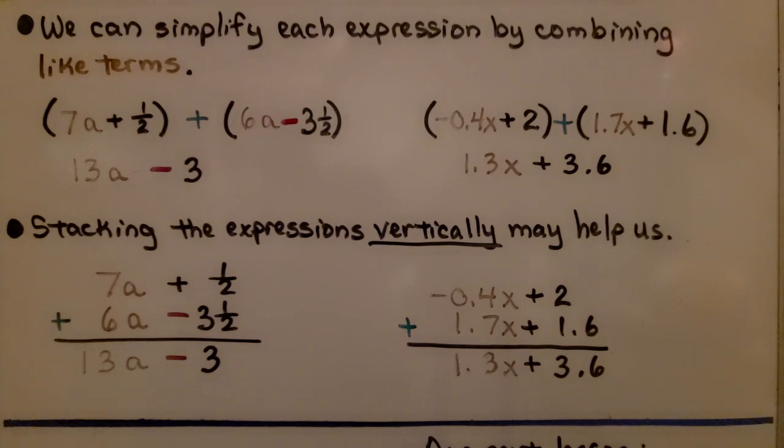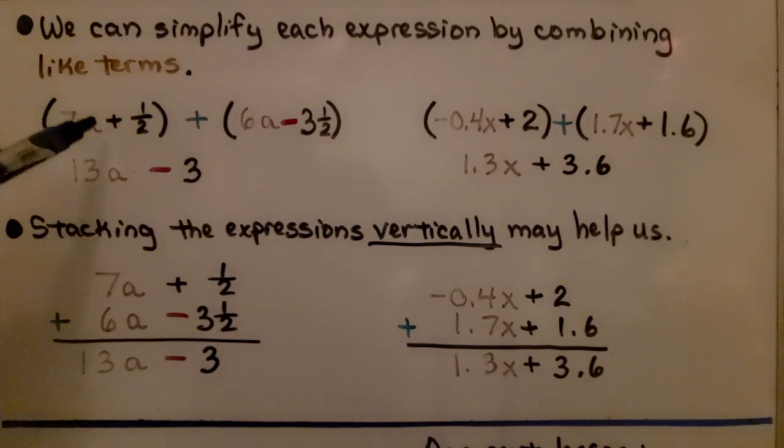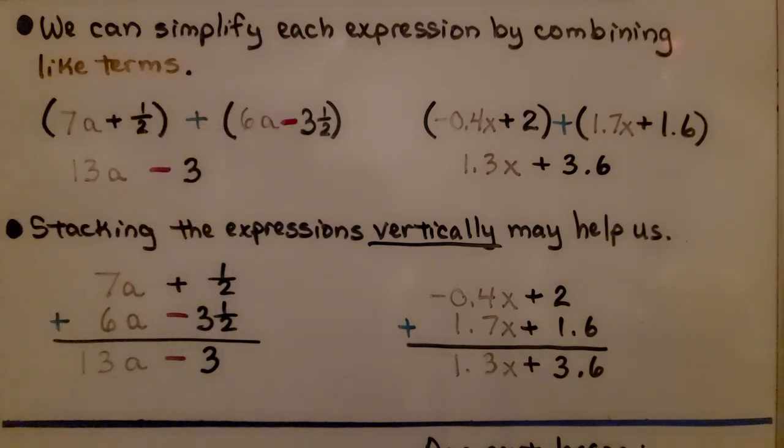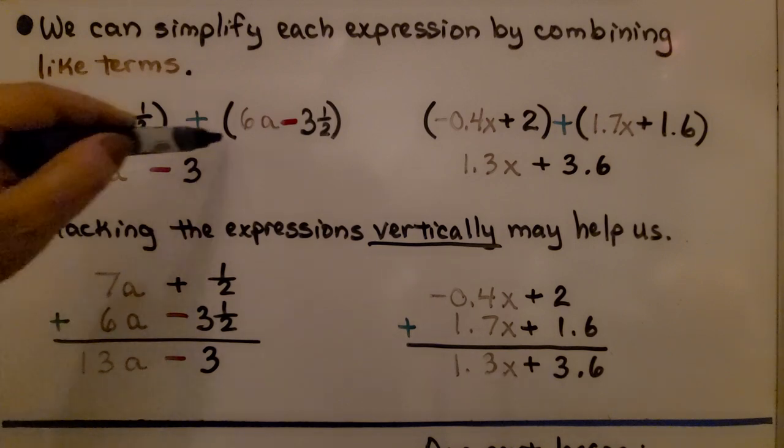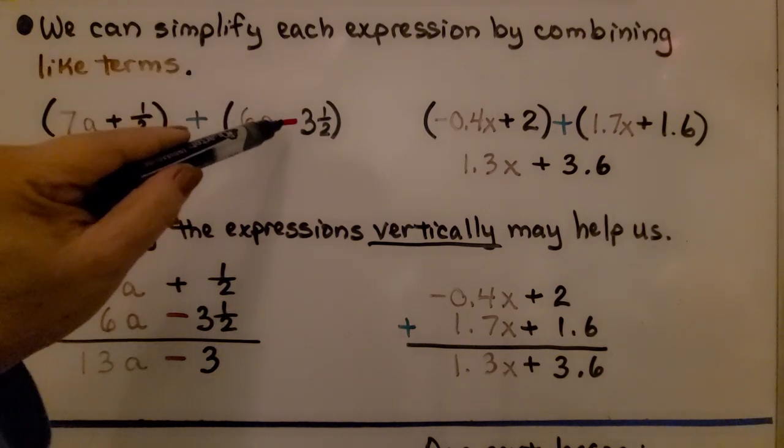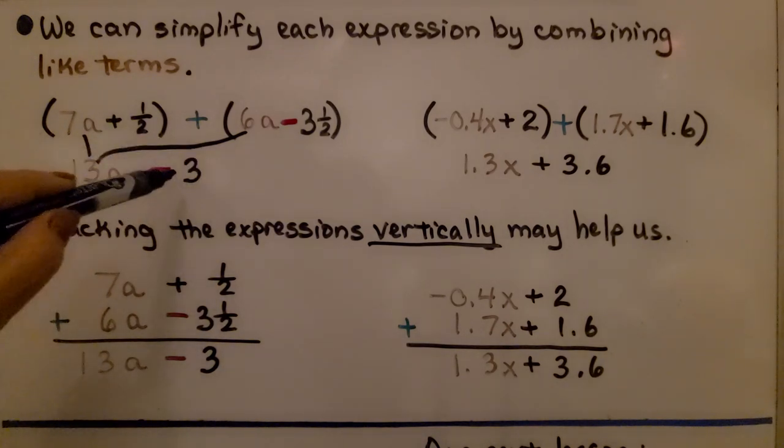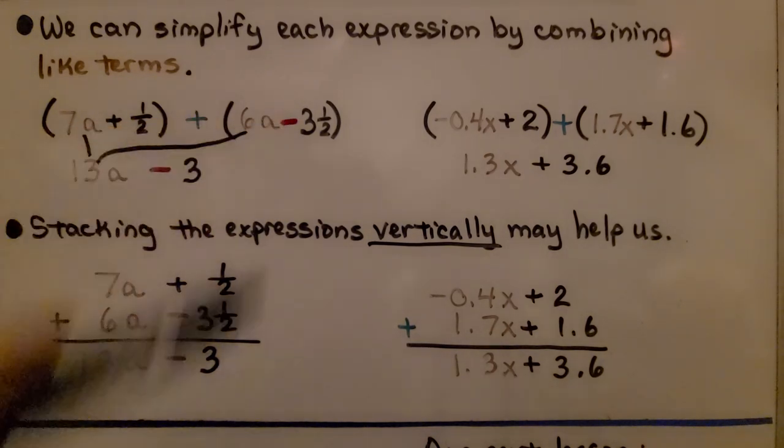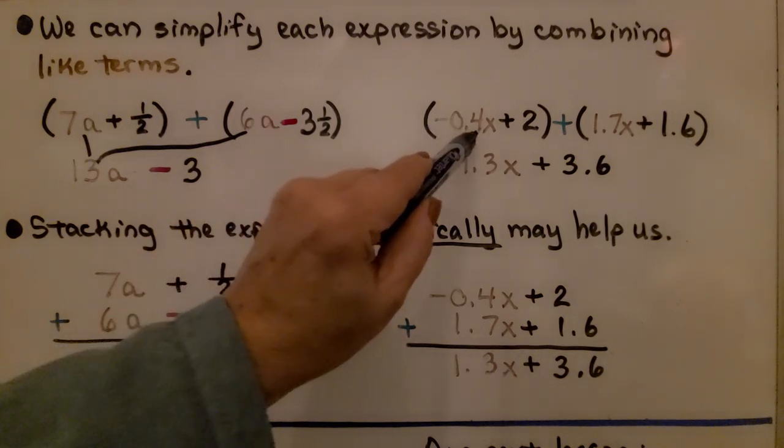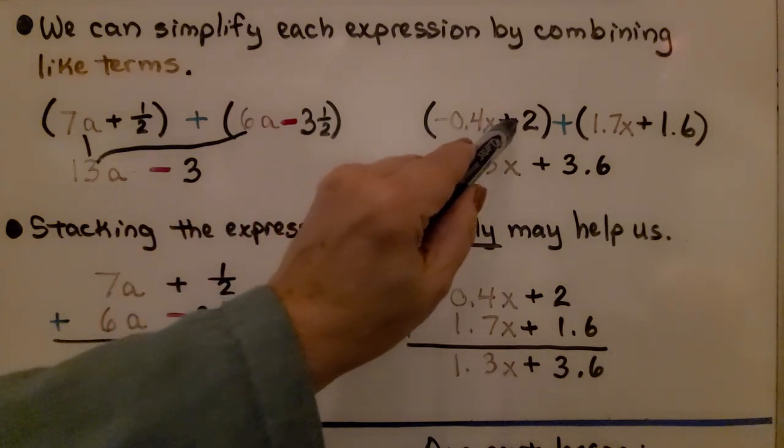We can simplify each expression by combining like terms. Here we have 7a plus 1 half plus 6a minus 3 and a half. We have a 7a and a 6a. That makes 13a. Now we have a positive half added to a negative 3 and a half. Well, that's going to give us a negative 3. We take the sign of the greater absolute value.